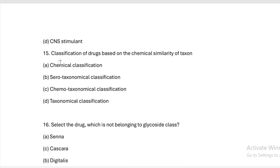Next question: Classification of drug based on chemical similarity of taxon. Option A: chemical classification. Option B: serotaxonomical classification. Option C: chemotaxonomical classification. Option D: taxonomical classification. Answer — chemical similarity means chemotaxonomical classification.